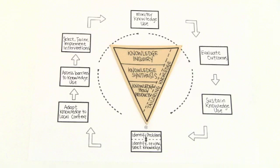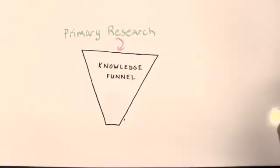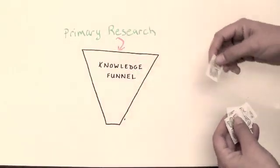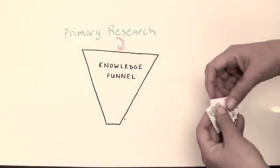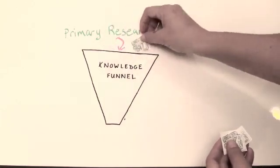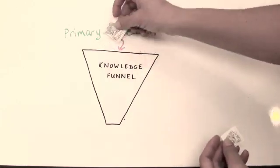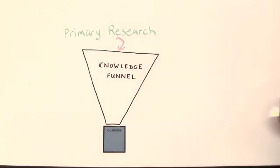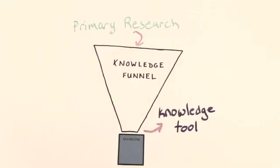First is knowledge creation, the triangle in the center called the knowledge funnel. As knowledge from primary research is filtered through the funnel, it is synthesized and refined to produce a knowledge tool — a summary of the knowledge presented in a clear, concise, user-friendly, and implementable format.